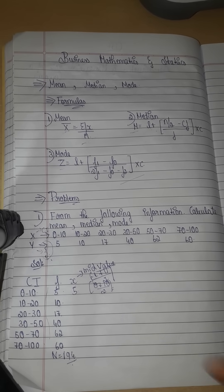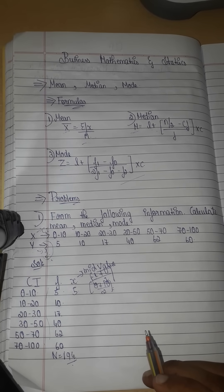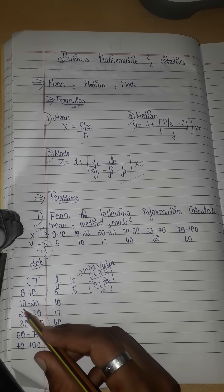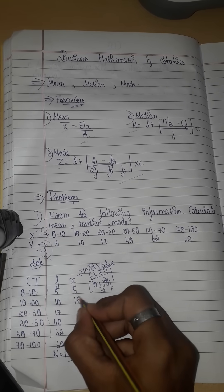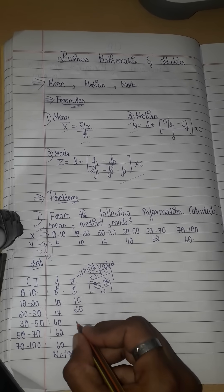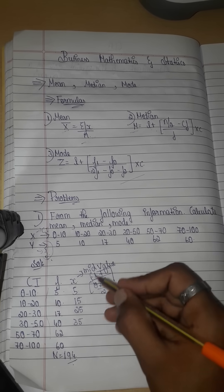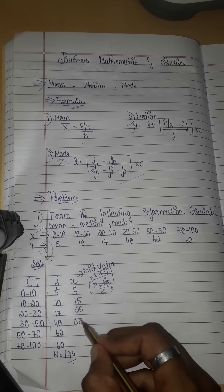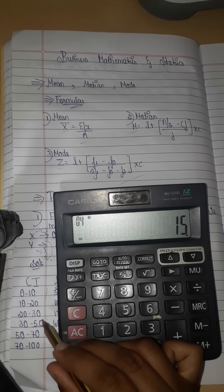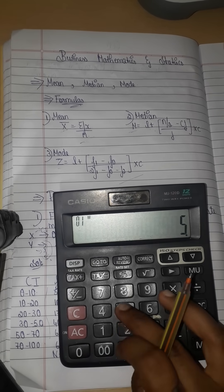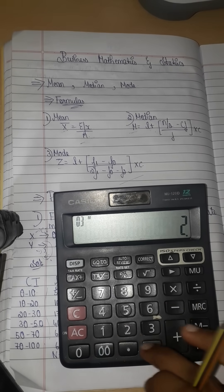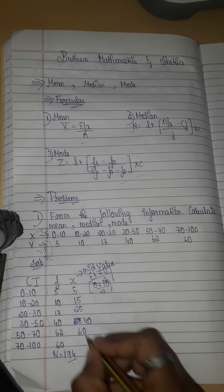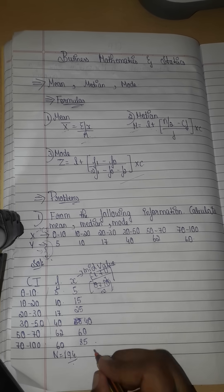We can find out mid-values by adding the class limits and dividing by 2. Continuing: 20 plus 30 divided by 2 is 25, then 35, then 40. For a range like 50 to 70: 50 plus 70 divided by 2 gives 60 as the midpoint. So we find out x for each class interval.